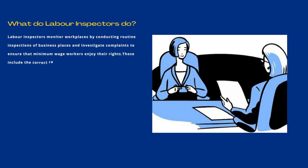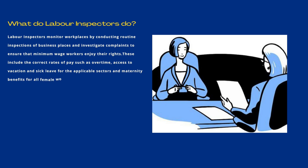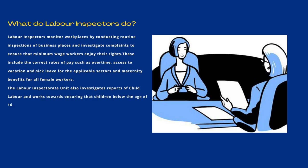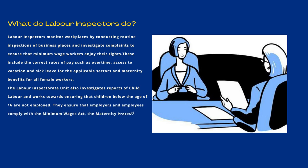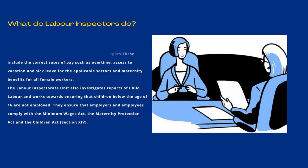These include the correct rates of pay, such as overtime, access to vacation and sick leave for the applicable sectors, and maternity benefits for all female workers. The Labour Inspectorate Unit also investigates reports of child labour and works towards ensuring that children below the age of 16 are not employed. They ensure that employers and employees comply with the Minimum Wages Act, the Maternity Protection Act, and the Children Act Section 14.